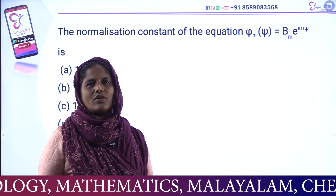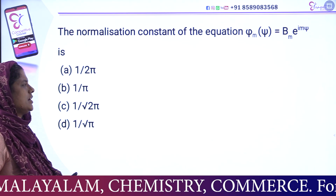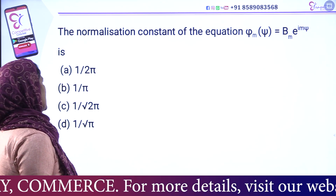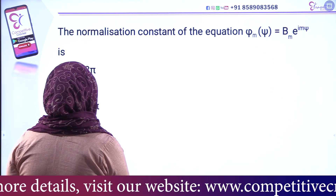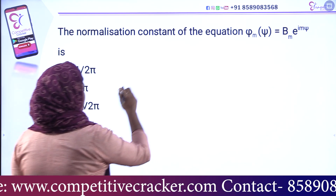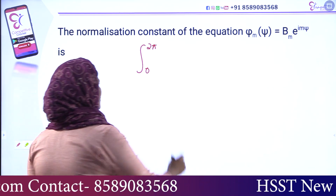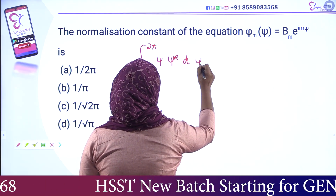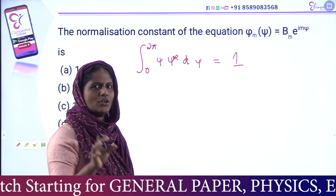Next question from last year's HSSD chemistry: the normalization constant of the wave function ψm = Bm times e raised to imφ is what? To find the normalization constant, we use the condition: integral from 0 to 2π of ψ times ψ* dφ is equal to 1.